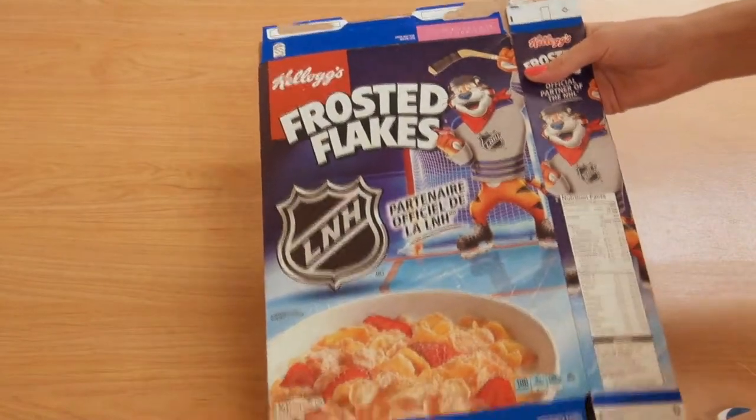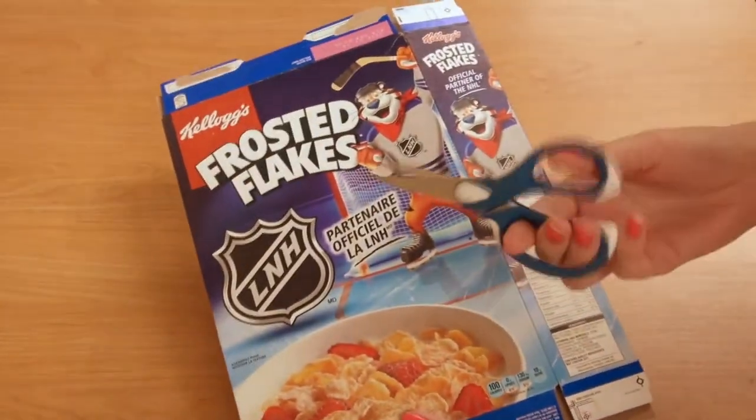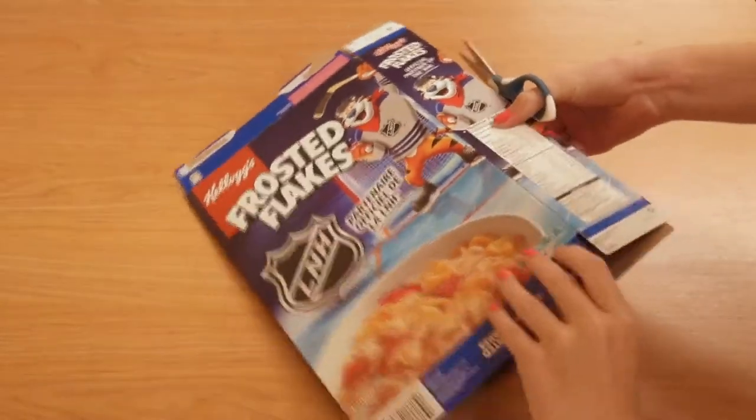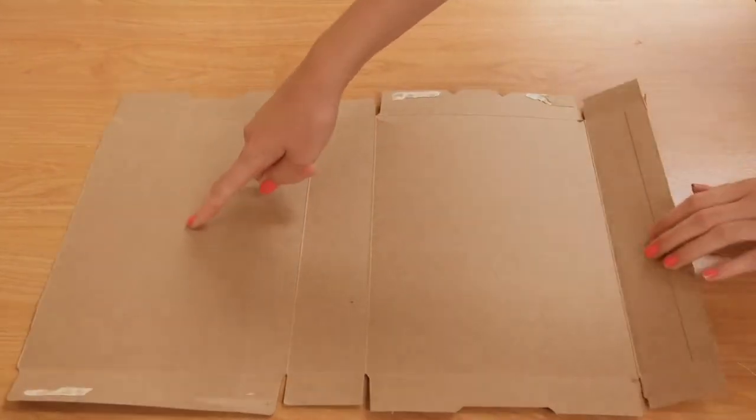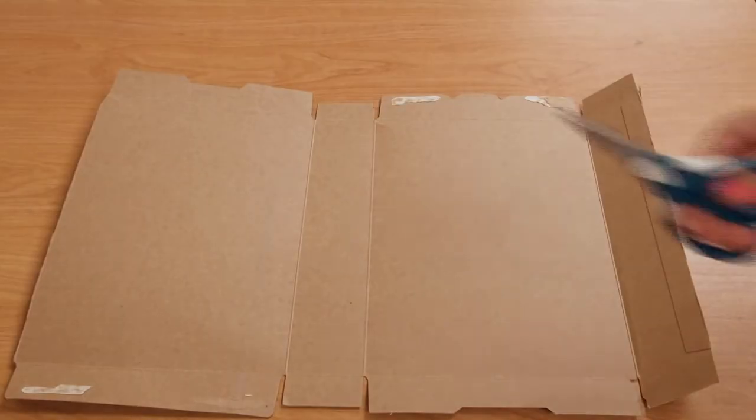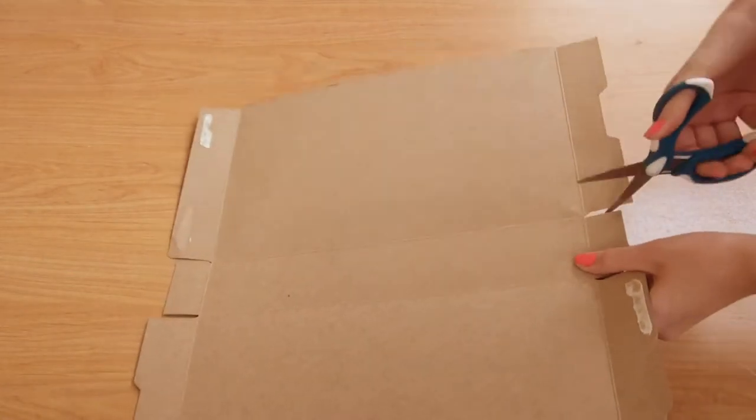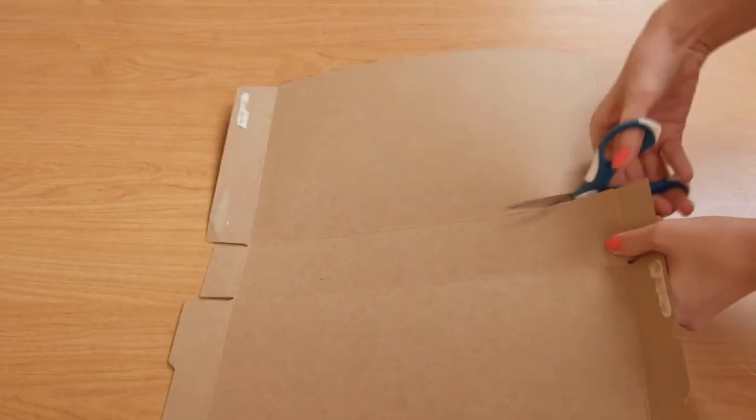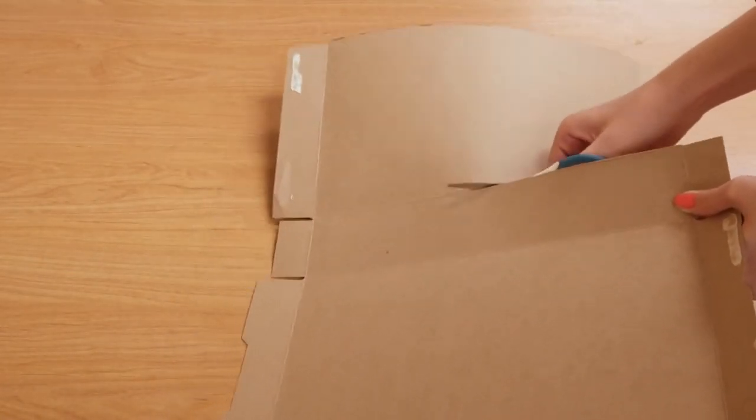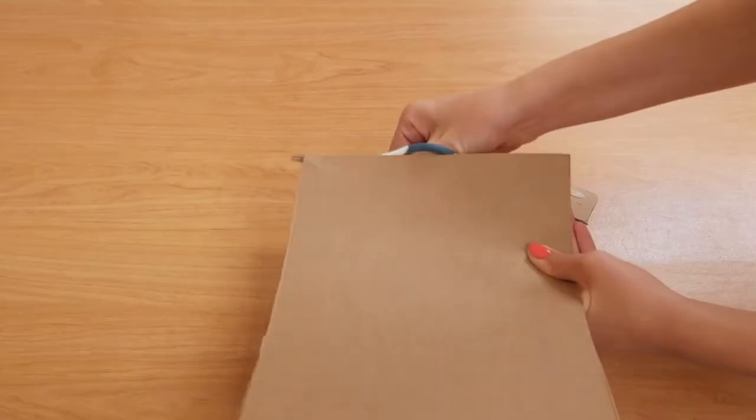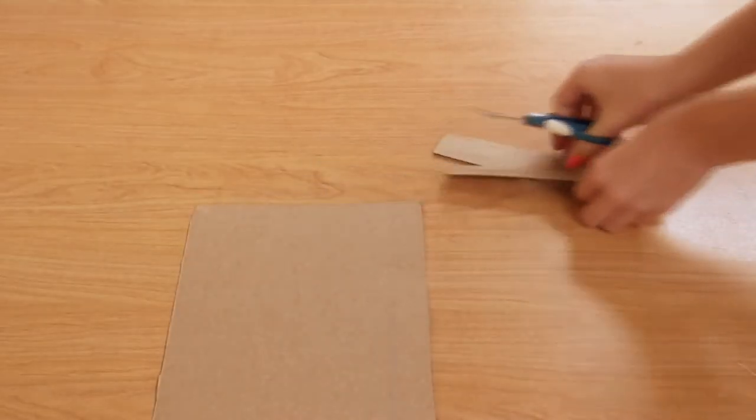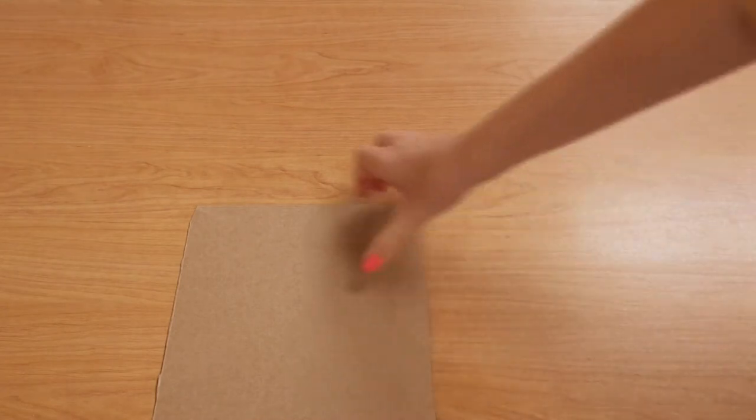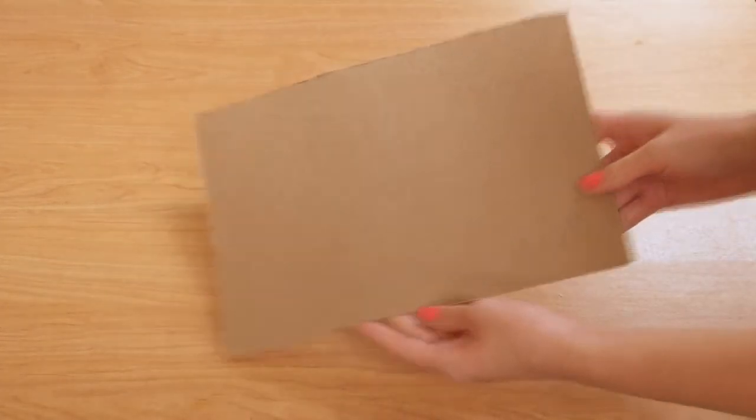First, open and lay out your cereal box. One cereal box will provide enough room to make two puzzles if you use each large side of the cereal box. Take your scissors and cut off the extra parts of the cardboard that you won't be using. This is what it should look like.